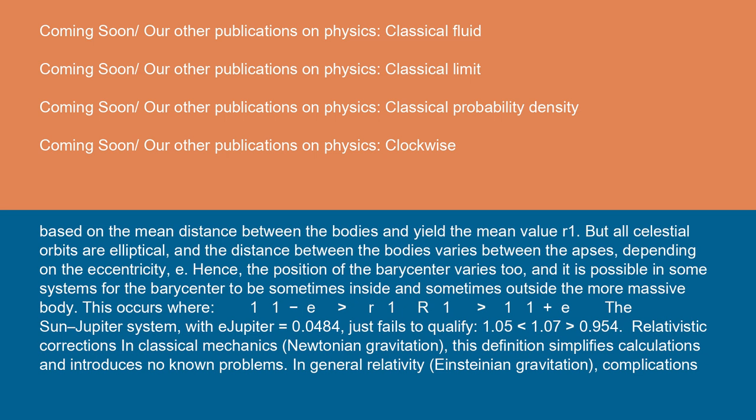In classical mechanics (Newtonian gravitation), this definition simplifies calculations and introduces no known problems. In general relativity (Einsteinian gravitation), complications arise because...